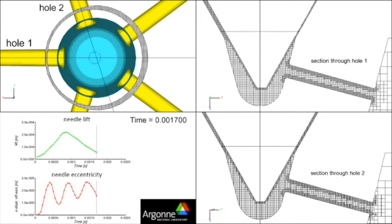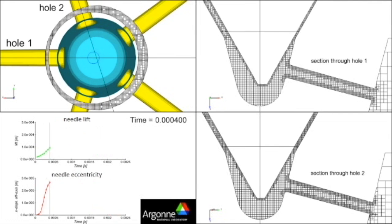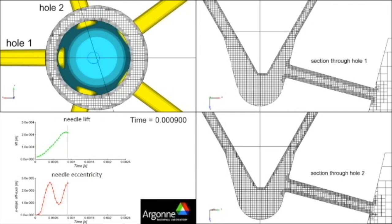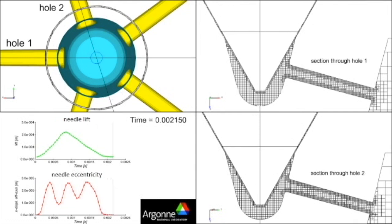This simulation suggests that needle wobble influences the flow inside the injector sack, resulting in injection-to-injection and plume-to-plume performance variations.